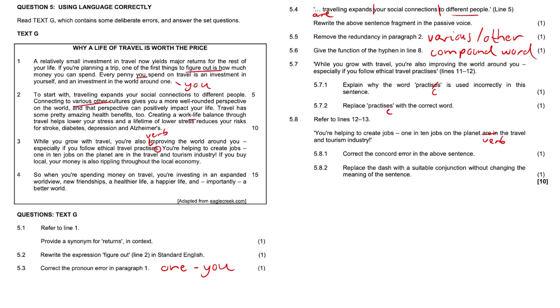And 5.8.2: Replace the dash with a suitable conjunction without changing the meaning of the sentence. Replace the dash with a suitable conjunction - maybe because, as, since. 'You're helping to create jobs because' or 'as' or 'since' - '1 in 10 jobs on the planet...'